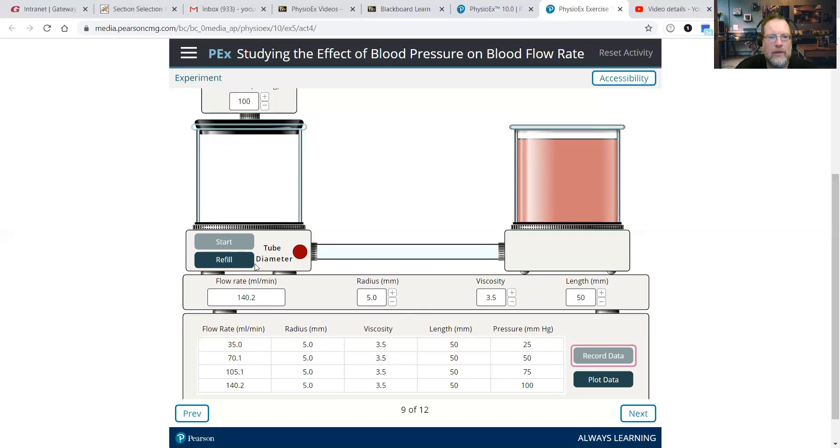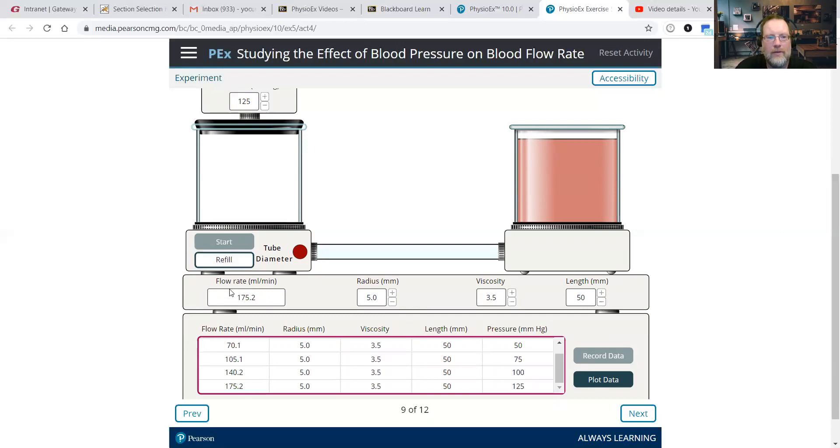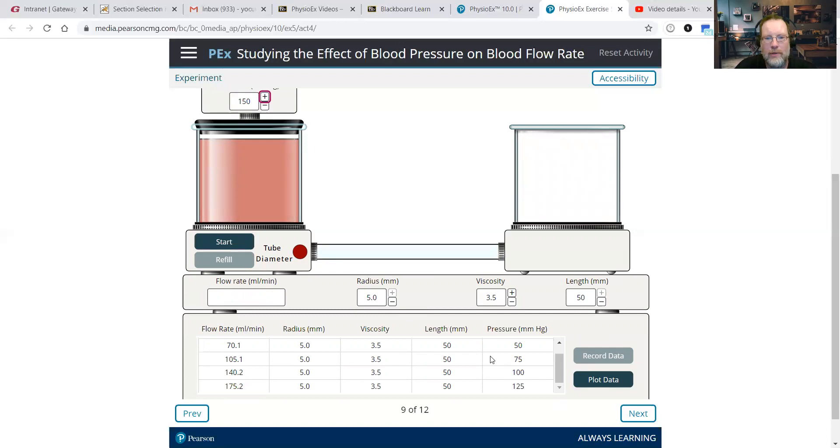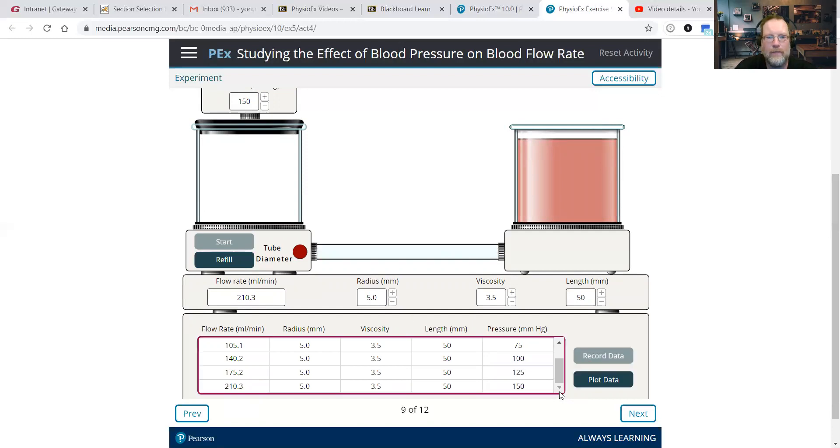So keep that in mind as we go. We're going to refill that. Go to 125. Click start. Record data. Gives us 35 increase from 140 plus 35 is 175.2. So we could predict that going up another 25 to 150 is going to add a 35 under that. We could potentially predict that we're going to have a flow rate of around 210 or so. Let's see if that's what ended up. And sure enough, 210.3.